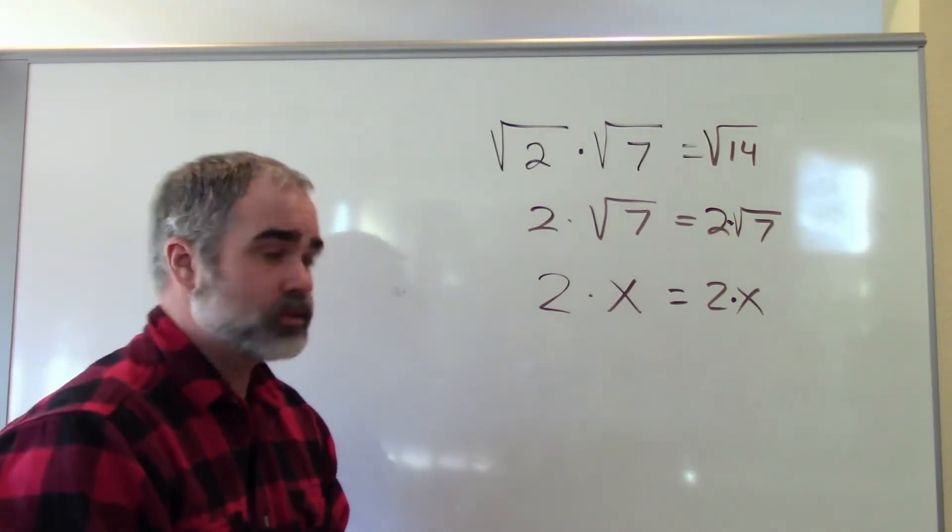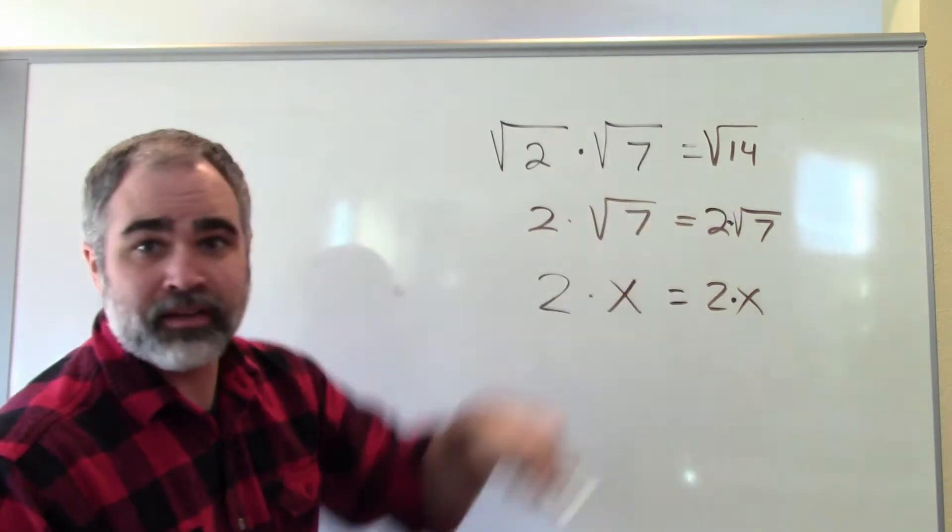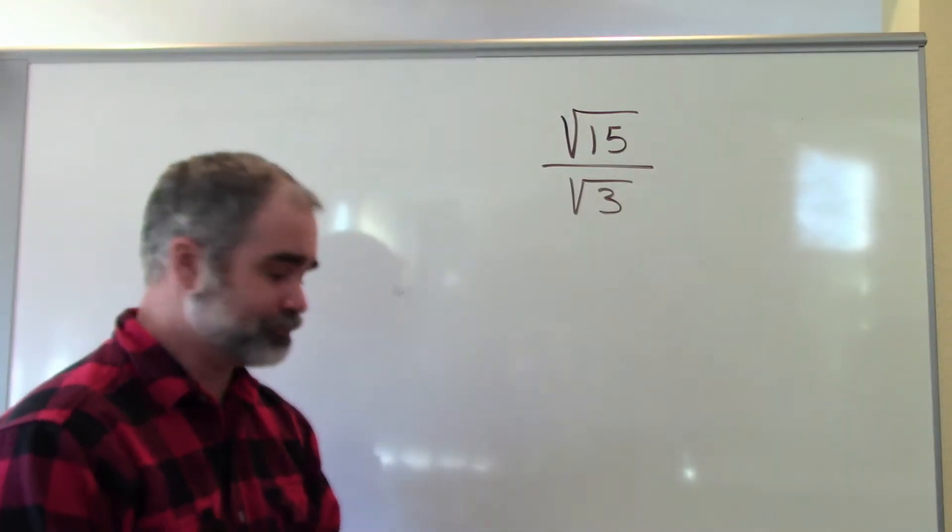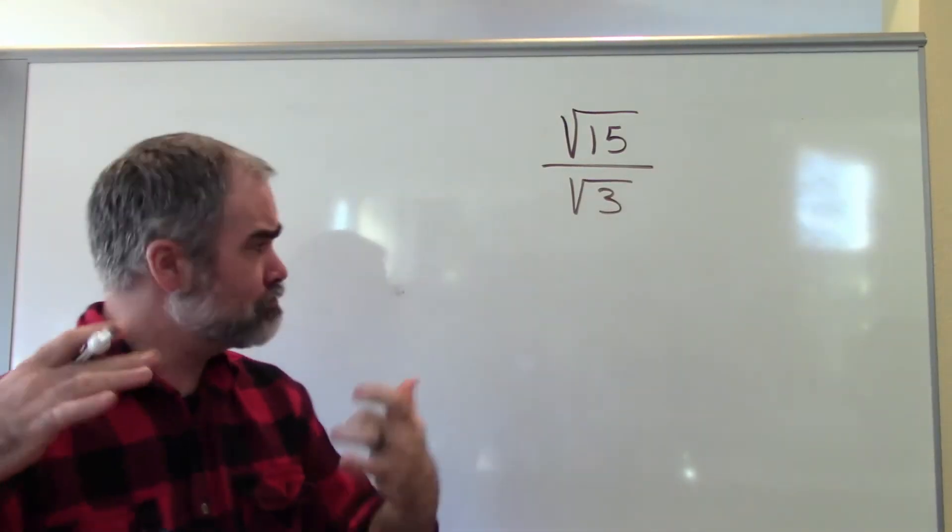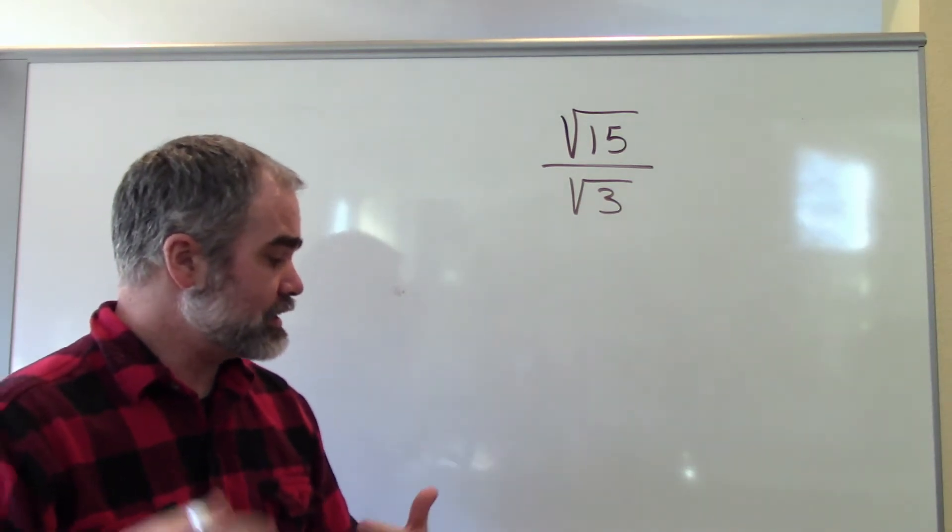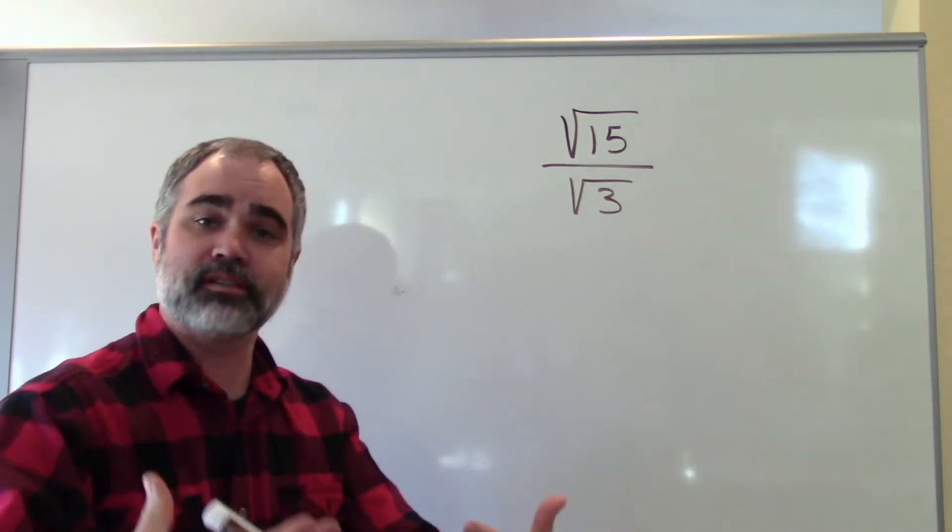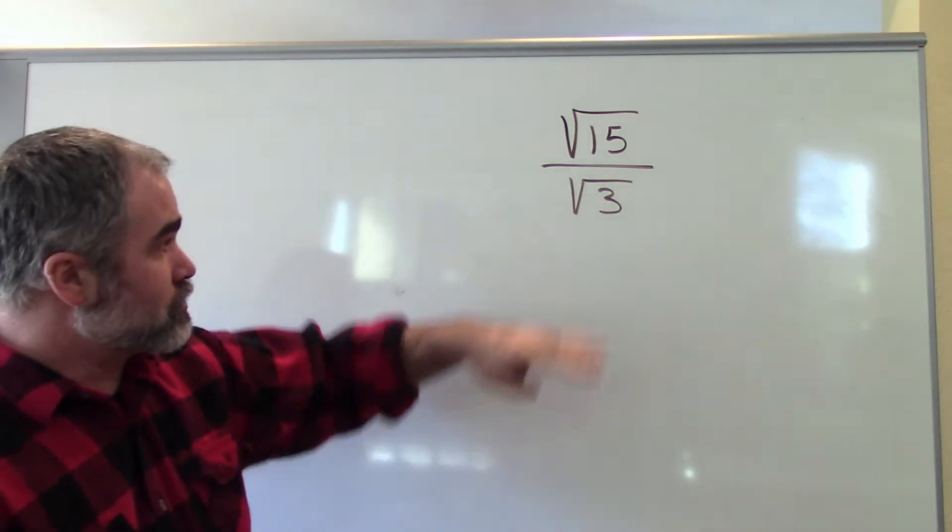So with square roots, you can multiply what's inside of them. No big deal. The next thing we'll talk about is division. Since I can multiply square roots together, it stands to reason that I can do the opposite of multiplying, which is division. And you can do that here as well.